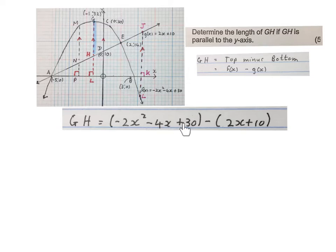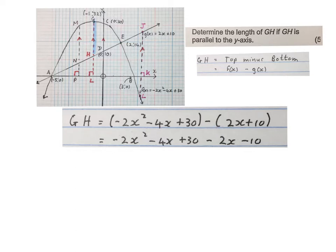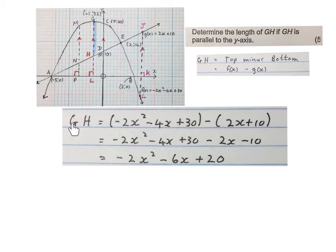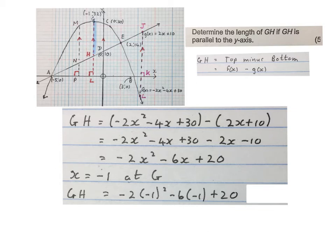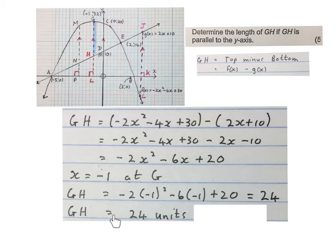I'll write the expression for the parabola minus the expression of the straight line. Simplify the minus into this bracket, then simplify, and this is an expression for the length of GH in terms of x. That is how long that blue line is in terms of x. Now I can see at g my x value is -1, so I write x = -1 at g. Substitute it into this expression. Everywhere in place of x I put -1 and simplify. Then you write GH = 24 units. Stop the video and get your brain around this.